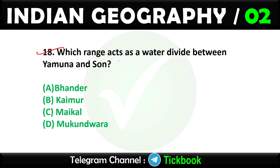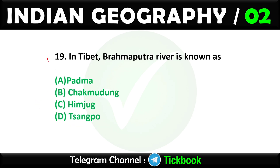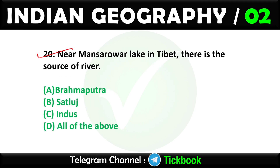Question eighteen: Which range acts as a water divide between Yamuna and Son? Option number B: Kaimura is the right answer. Question nineteen: In Tibet, Brahmaputra river is known as — easy question. Option number D: Sangpo.